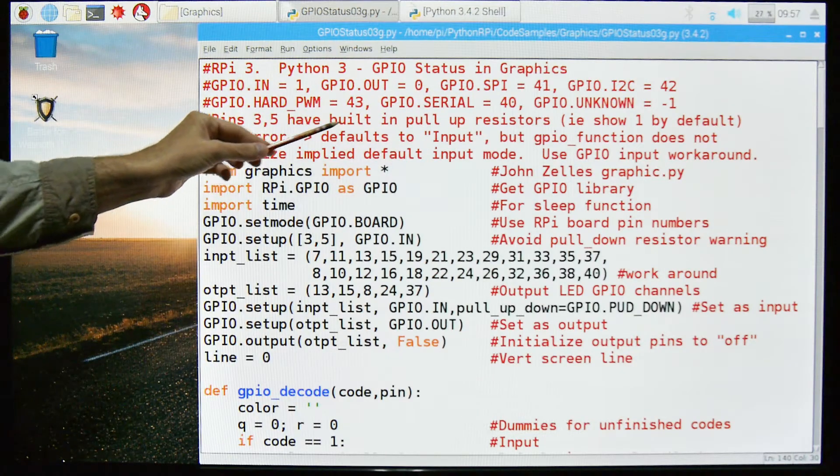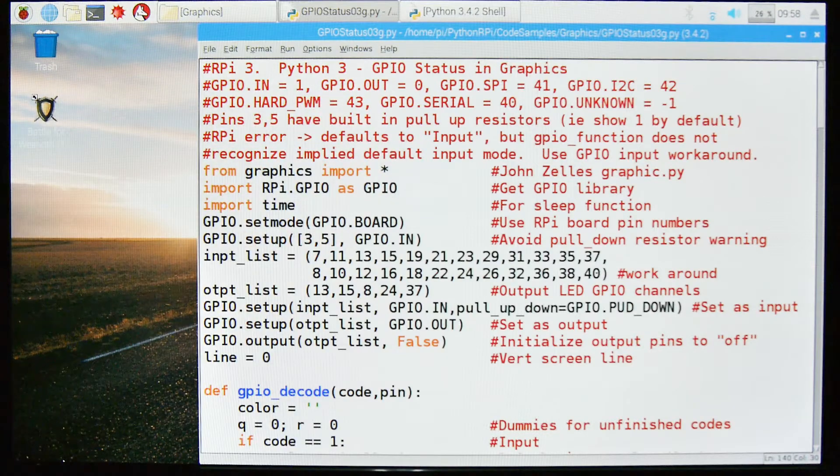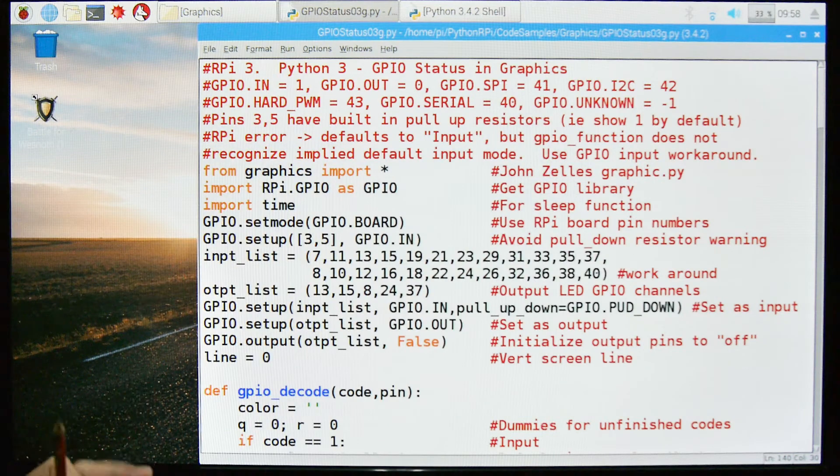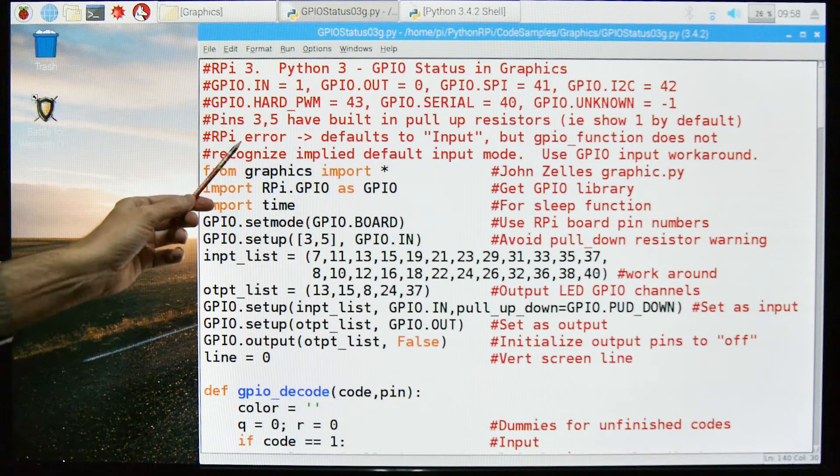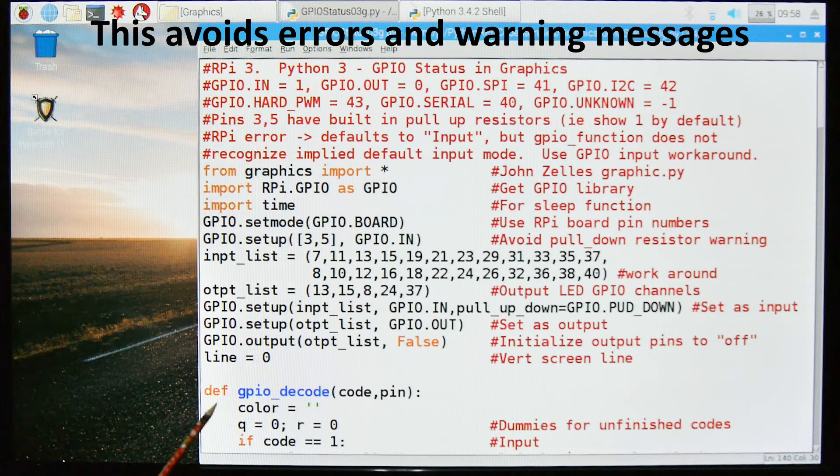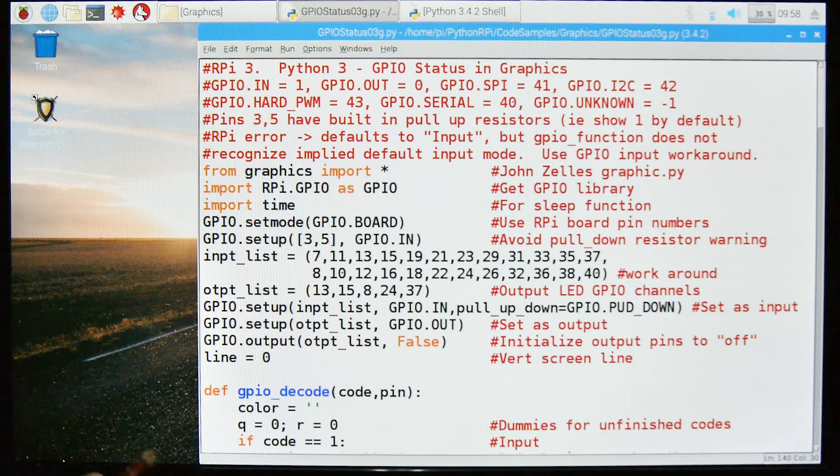Pins 3 and 5 have built-in pull-up resistors and they show up as a 1 by default. So I've got to have a workaround on that because the RPI defaults to input, but in fact when you attempt to use it, it doesn't. So you have to explicitly declare it as an input. But I'll show you how I did that in a second.